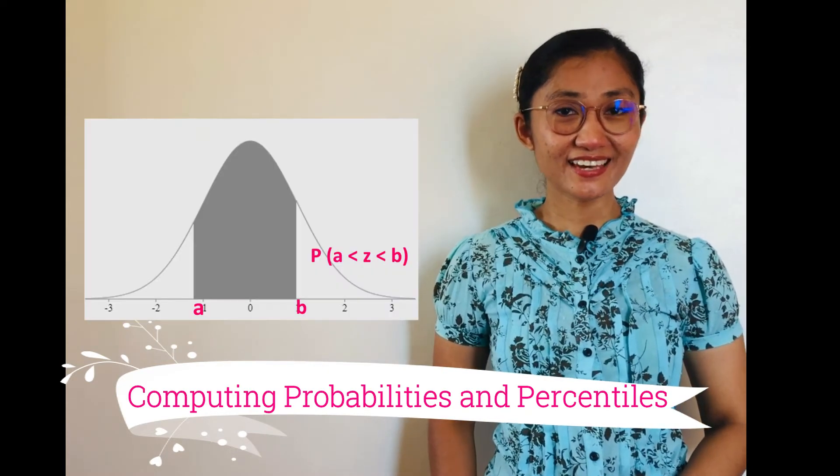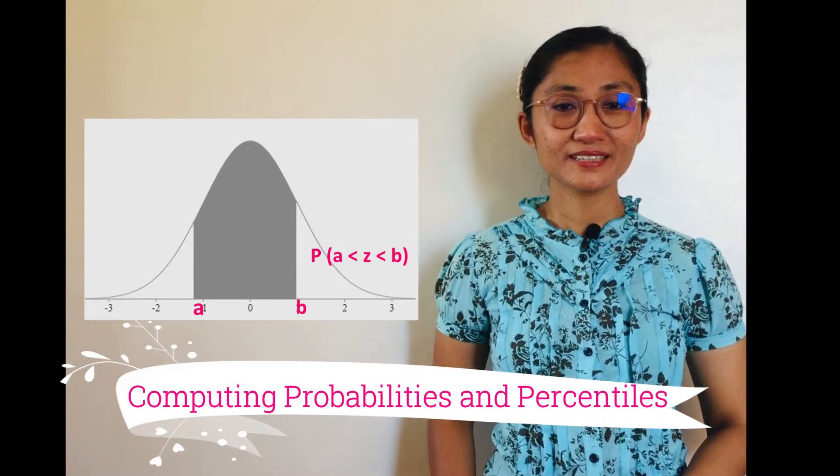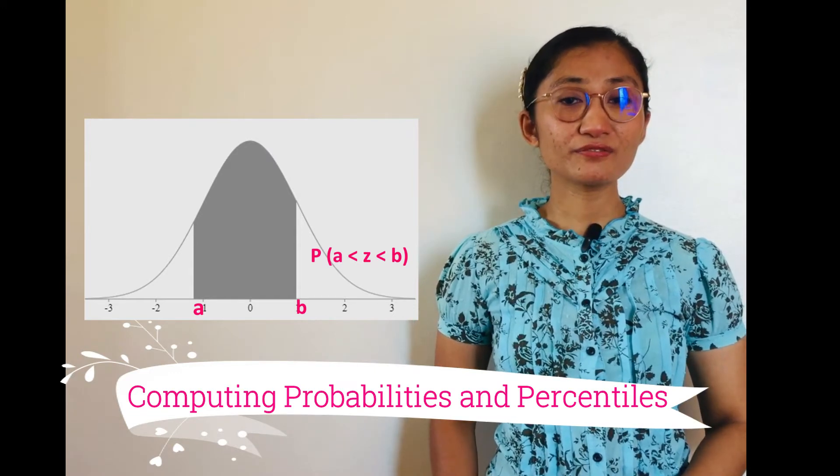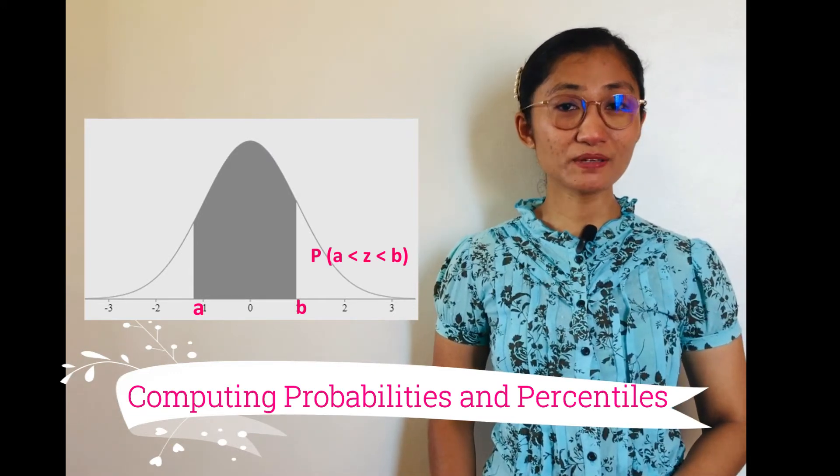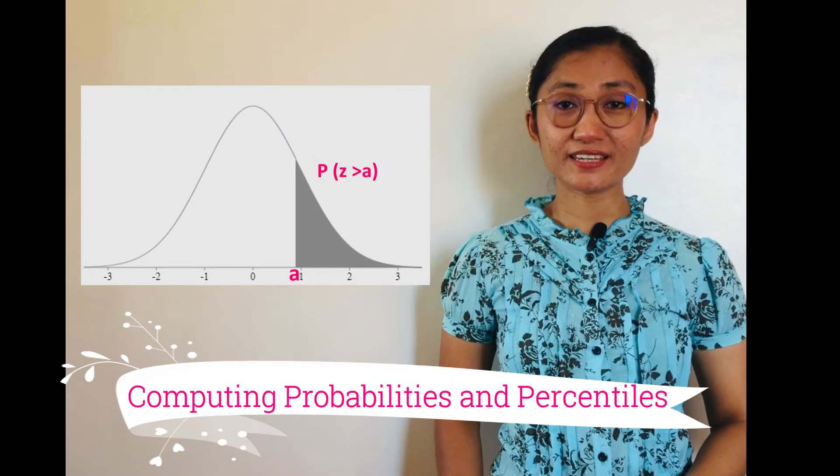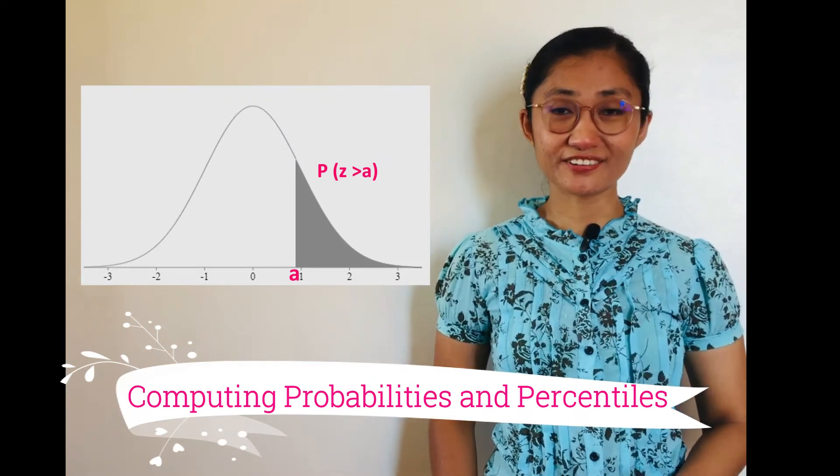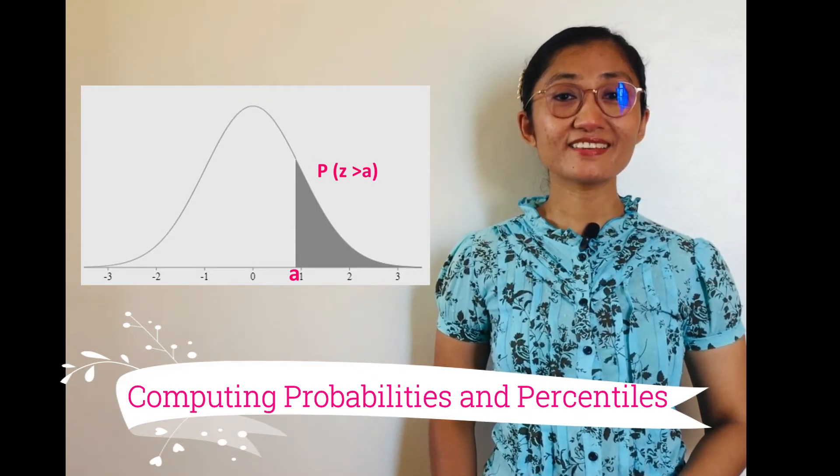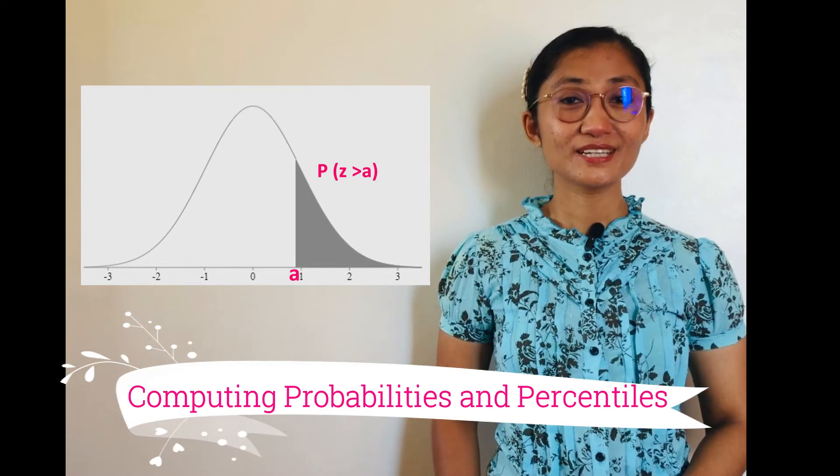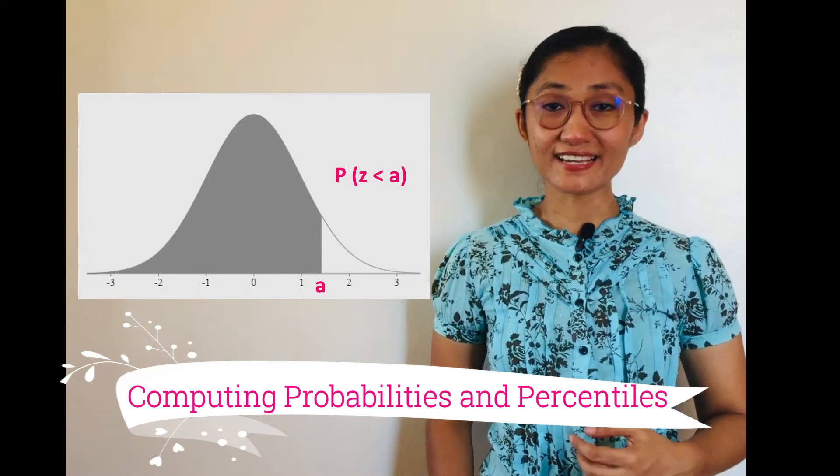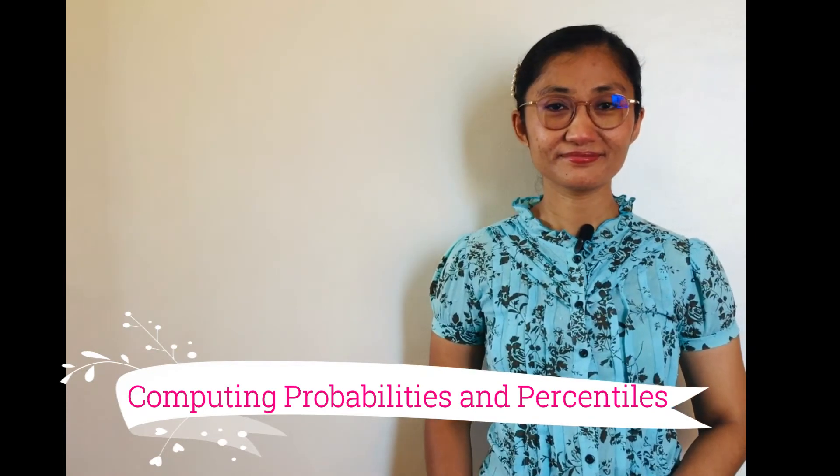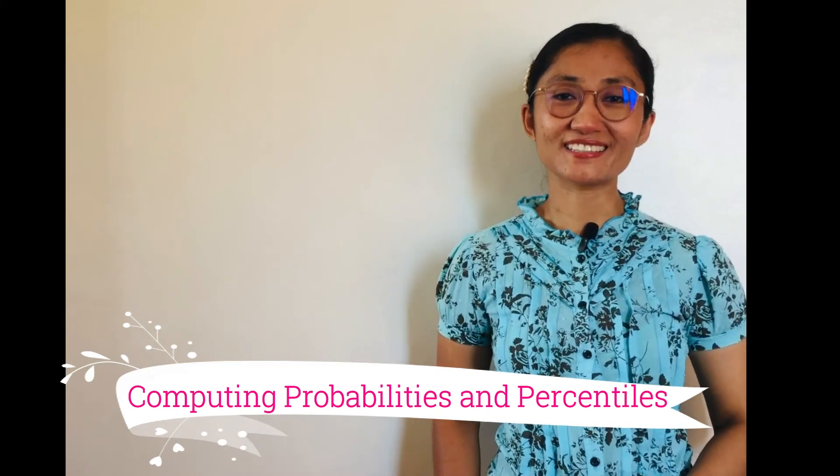Given that A and B are z-score values, probability of z is greater than A but less than B refers to the probability that the z-score is between A and B. Probability of z is greater than A refers to the probability that the z-score is greater than A. Probability of z is less than A refers to the probability that the z-score is less than A. You'll better understand this in the following examples.